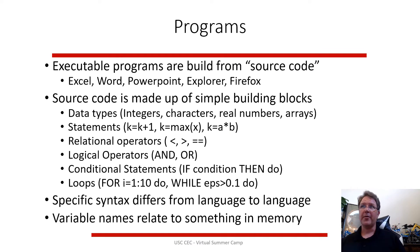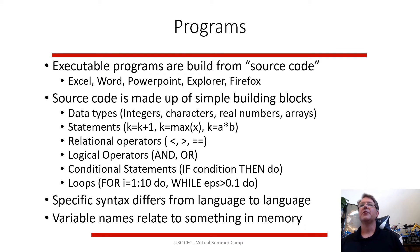So what is a program? A program is something that does stuff on your computer, and it's built from source code — a text file full of instructions. This defines what your data types are: integers, characters, real numbers, arrays, matrices, or other structures. It dictates how you put your data together inside the memory of the computer.